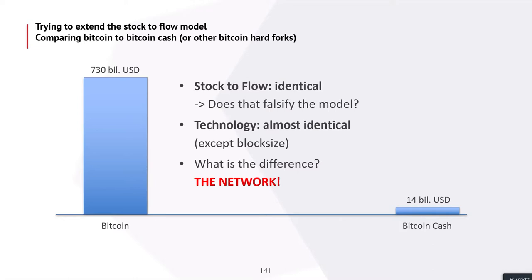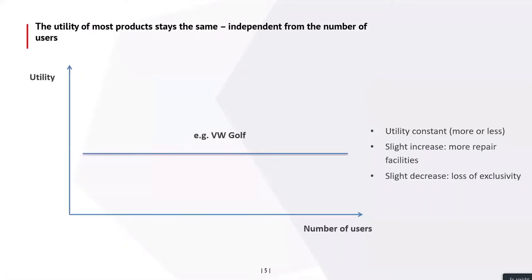What's the network effect? Basically, the network effect says that as the number of users goes up, the utility of a product goes up. Take a car — a Volkswagen Golf, the most popular car in Germany. If more people buy it, there might be scale effects, but the utility of the car doesn't really change. It changes a little because there are more repair stations, but it could also go down because it's less exclusive — if you have a Lamborghini and many people have it, the utility might actually go down. So more or less, it's constant.